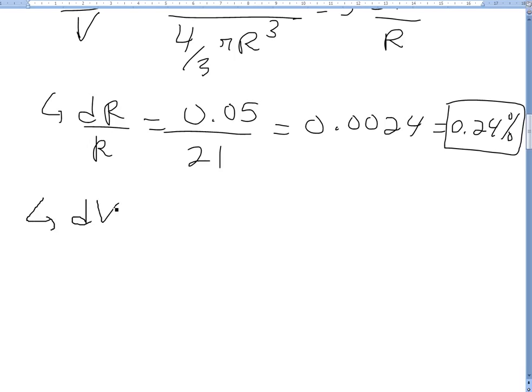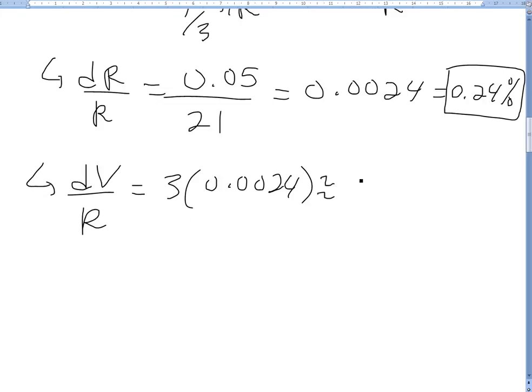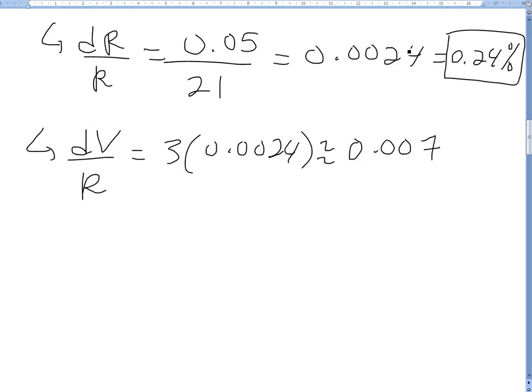And now the dV over V, this equals basically 3 times this 0.0024-ish, and we get about 0.007. So it's a bit larger. And then this would equal, if you're getting a percentage, it's going to be 0.7 percent.